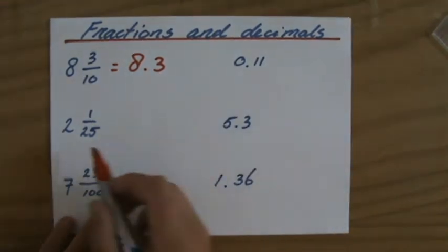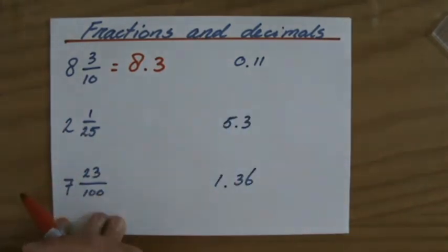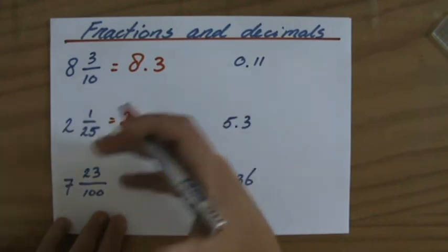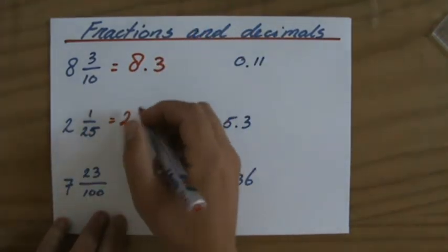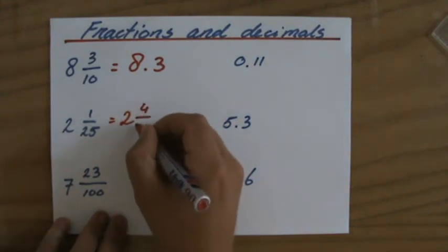2 and 1 over 25. Again, decimals are tens, hundreds, thousands. And I explained this in more detail in my previous videos. So I have to find an equivalent fraction out of 10 or out of 100 or out of 1,000. In this case, 1 over 25 is equivalent to 4 over 100.